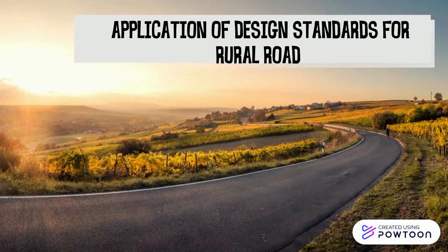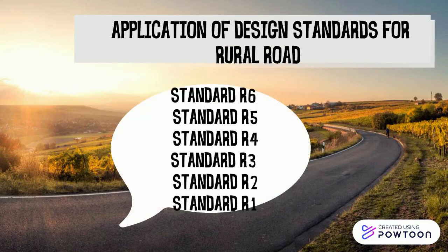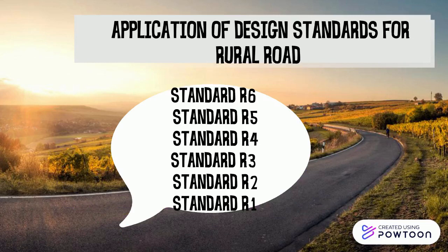There are six applications of design standard for rural roads. Standard R6 provides the highest geometric design standard for rural or urban areas, usually serving long trips with high speed of traveling, comfort and safety. Standard R5 also provides a high geometric standard and usually serves long to intermediate trip lengths with high to medium traveling speeds. It is usually with partial access control.